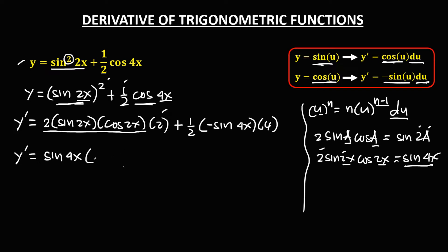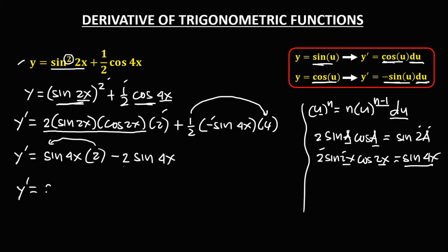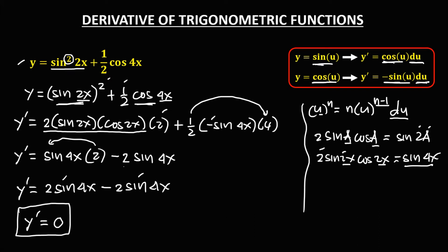We still have the remaining factor of 2, and since the second term is negative: one-half times 4 equals 2, so we have minus 2 sine 4x. Combining, y prime equals 2 sine 4x minus 2 sine 4x, which equals 0. So the derivative is 0.